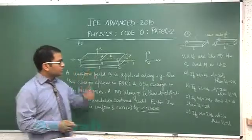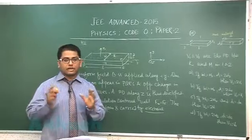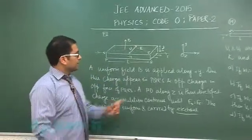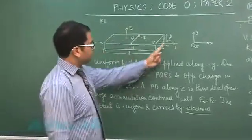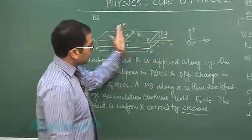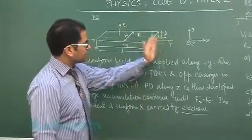Paragraph 2 related to question number 19 and 20 is quite a beautiful concept. It is a strip which carries current I in this direction and it is uniformly distributed.